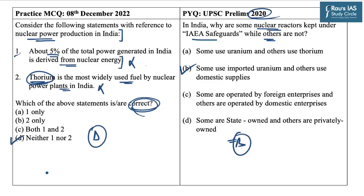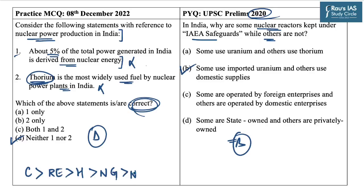The share of different sectors in electricity generation in India is as follows: first is coal, second is renewable energy, third is hydroelectricity, fourth is natural gas, and fifth — as we discussed — is nuclear energy. Try to remember this trend in decreasing order of contribution.